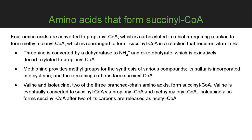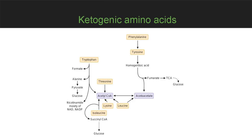Valine and isoleucine, two of the three branched-chain amino acids, form succinyl-CoA. Valine is eventually converted to succinyl-CoA via propionyl-CoA and methylmalonyl-CoA. Isoleucine also forms succinyl-CoA after two of its carbons are released as acetyl-CoA. Ketogenic amino acids tryptophan, phenylalanine, and tyrosine also contain carbons that can form glucose. Leucine and lysine are strictly ketogenic and do not form glucose.